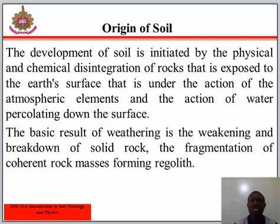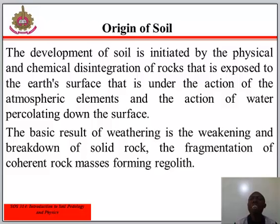Usually, above the regolith lies the soil. Soil normally consists of an abundance of living plant roots, a variety of dead and rotten plant parts in varying stages of decomposition, an unbelievable quantity of microscopic plants and animals, both living and dead, and variable amounts of air and water. Thus, soils are formed from hard rock masses, loose unconsolidated transported materials, and organic residue.